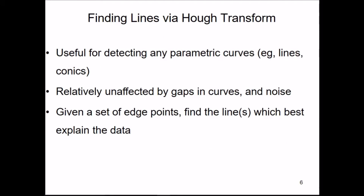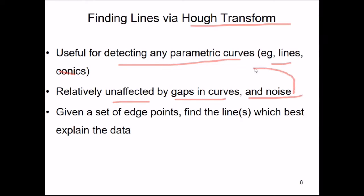Finding lines via Hough transform — this is a very widely used transform. The Hough transform is useful for detecting any parametric curves, whether lines or conics. It is relatively unaffected by gaps in curves and noise, which is the most important property to emphasize. Compared to Canny and other operators like Sobel, those are somewhat affected by gaps and noise, but Hough transform is not.